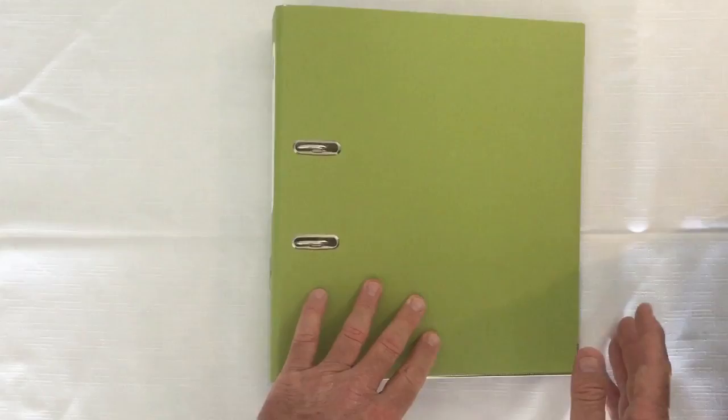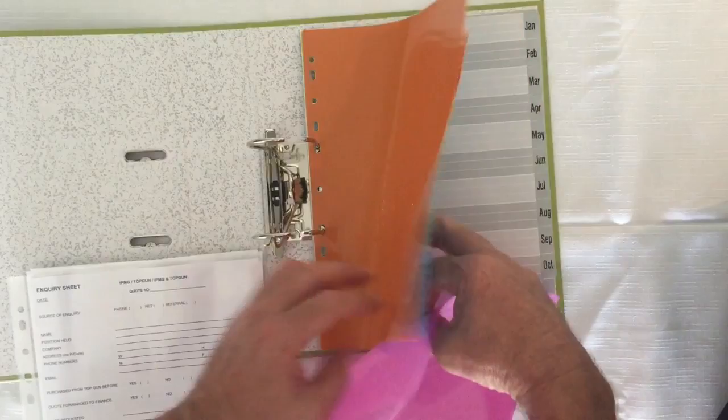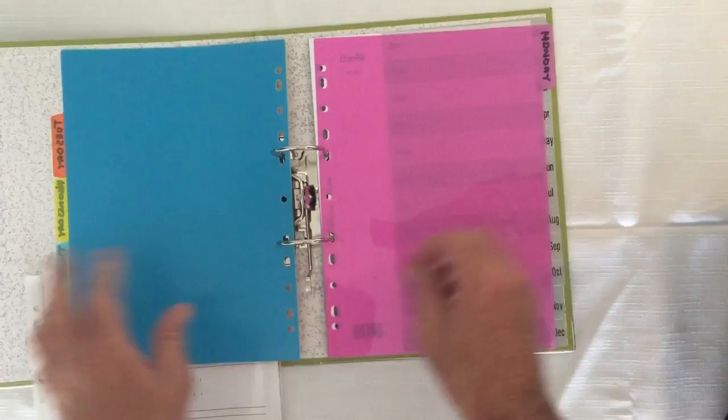The other thing you've got to do is if it's Monday, you pull all that out and you know Monday's empty. Then what you do with Monday is you move Monday to the back of the folder. The reason you do that is so that tomorrow morning when you come into work, all you've got sitting there is Tuesday.